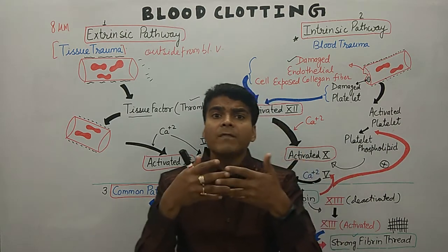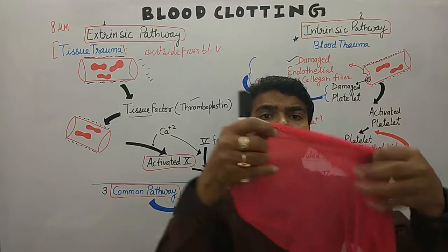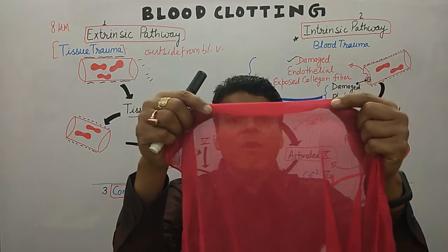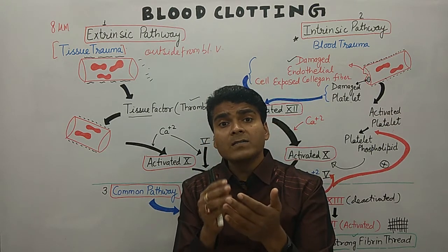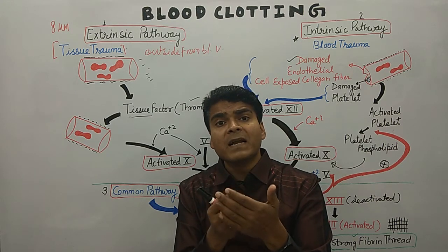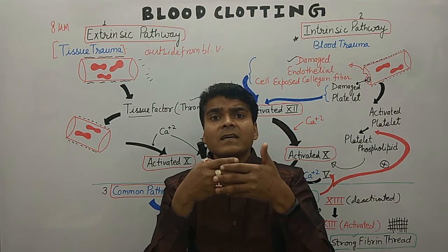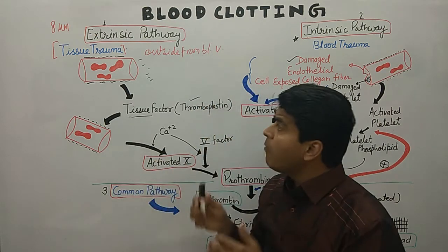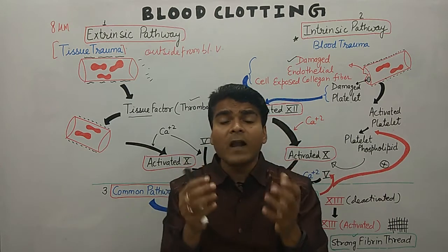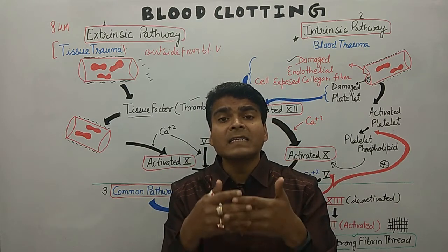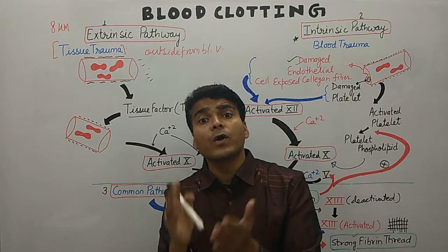In the clotting process, how does the body make this net? This is the net — the body makes a net because it does not want to release blood cells through it, so the net is of a very small size. The net is made up of thread, and what the body needs to make these threads is a raw material. The raw material is the clotting factor, or we can say coagulation factor.